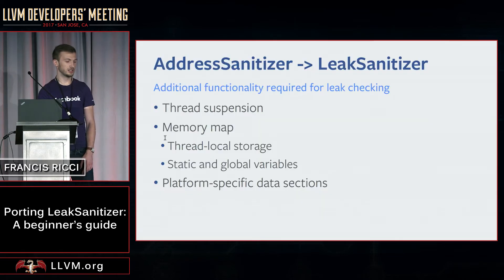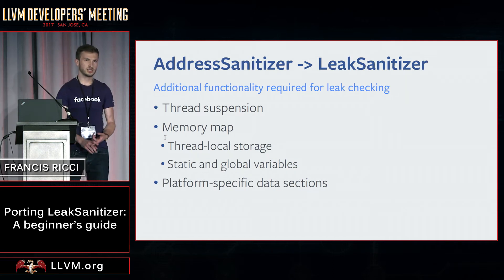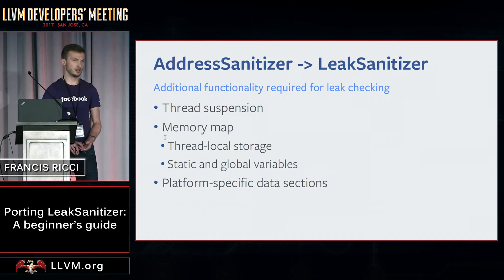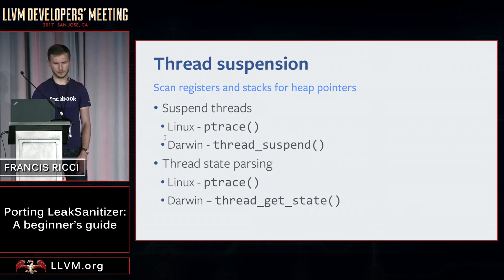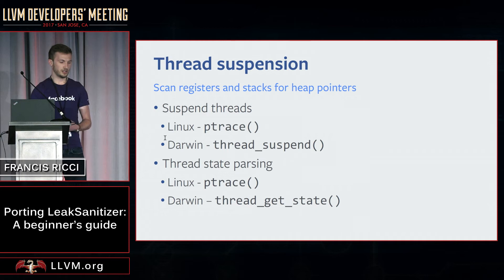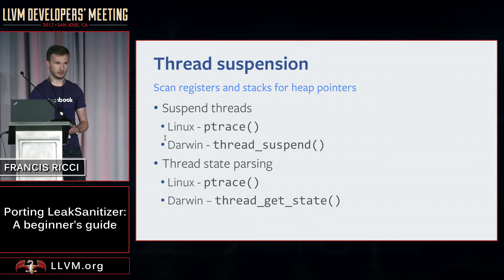So I'm going to talk about the steps you need to take to get from address sanitizer to the ability to look for leaks. You need the ability to suspend threads and parse their state, and you need the ability to generate a memory map and handle platform-specific data sections. On Linux we can use ptrace to suspend threads and get information about them. On Darwin we don't have ptrace, so we use the thread suspend and thread get state system calls. We use this information to scan the registers and the stacks in each thread for heap pointers, which we then ignore by default when looking for leaks.